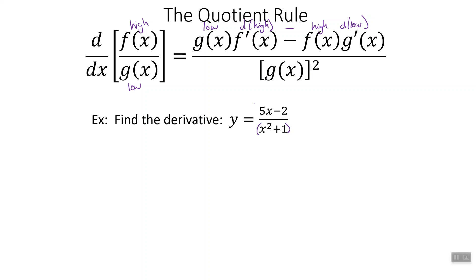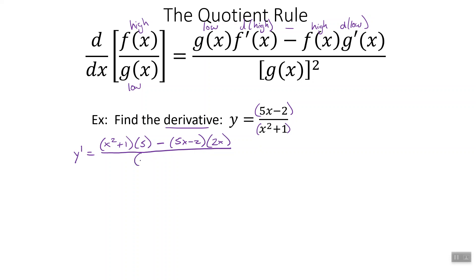So we've got a bottom function here, x squared plus 1, and a top function here, 5x minus 2, and we want to find its derivative. y prime is low — the regular function on the bottom, x squared plus 1 — times the derivative of the top, D high. Derivative of 5x minus 2 is just 5. Minus the top function, 5x minus 2, times the derivative of the bottom. Derivative of x squared is 2x, derivative of 1 is 0. Now we square the bottom — x squared plus 1 squared. So there's our derivative — that's the calculus part, done.